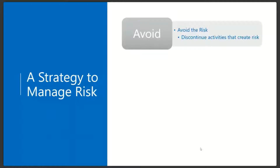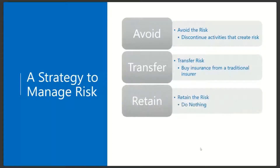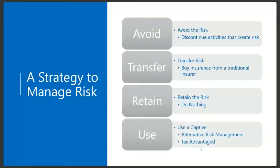When managing risk, the first option is to avoid the risk altogether — discontinue the activity or discontinue operating that business. The other option is to transfer that risk by buying insurance from an insurance company. Finally, for hard-to-identify risks, they can do nothing — just say that's a cost of doing business and hope it doesn't happen, retaining that risk as part of their business model. The strategy I want to talk about today is setting up a captive insurance company or a captive reinsurance company, quantify that risk, and take care of it through the captive insurance model.